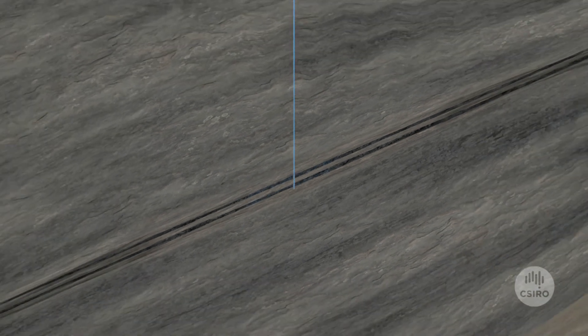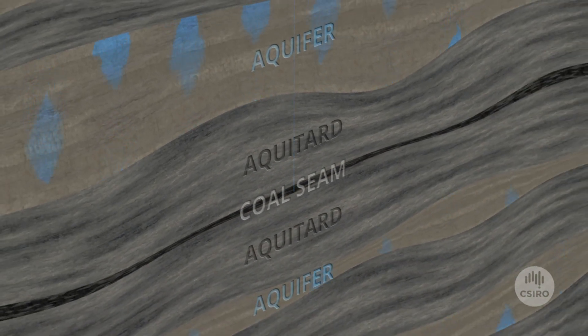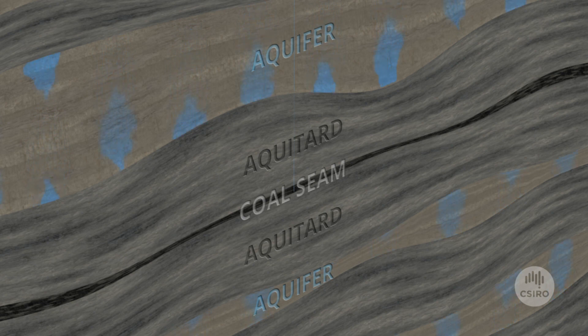Water in the aquifers can then move towards the coal seam. Just how fast and far this happens depends on the type of and connectivity between the aquifers and aquitards.